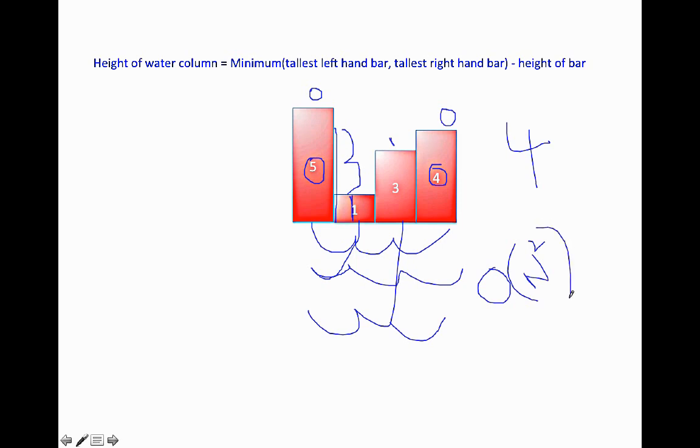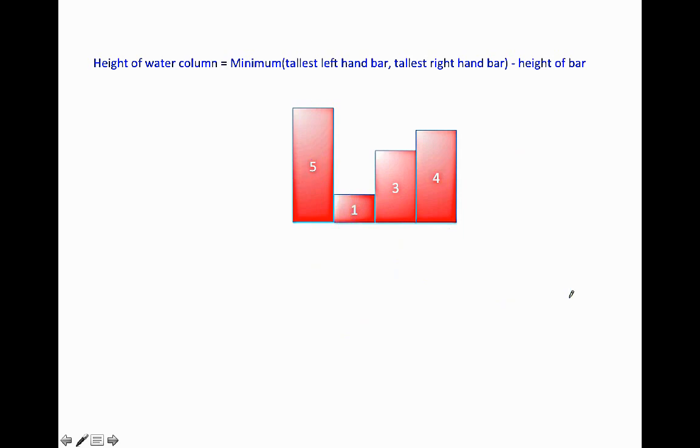However, using this approach that we saw in an earlier problem of calculating stock price, we could just keep track of the maximum value and decrease our time complexity. For example, we start here from the left-hand side. We know that the tallest left-hand bar to five doesn't exist so we just ignore that. The tallest left-hand bar above one is five. Just keep track of the maximum value. One is less than five so the tallest left-hand bar above three is also five. Three is also less than five so the tallest left-hand bar above four is also five.